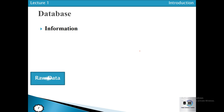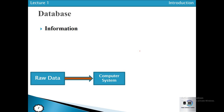A computer system processes the raw data and converts that data into information.